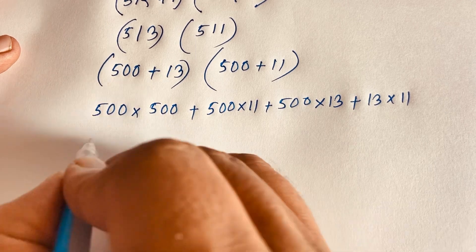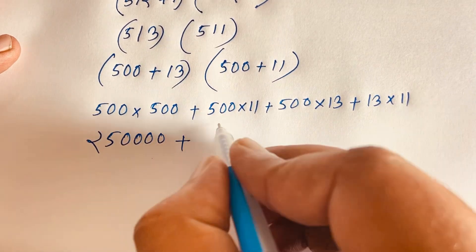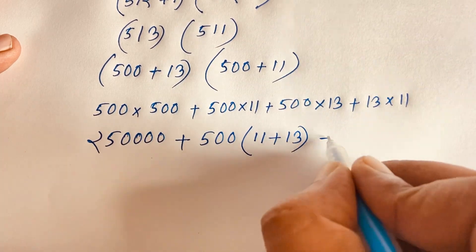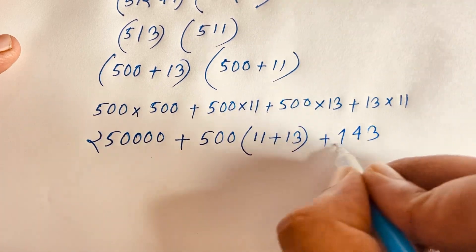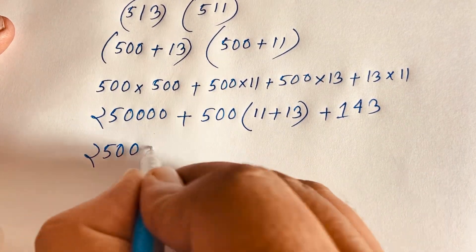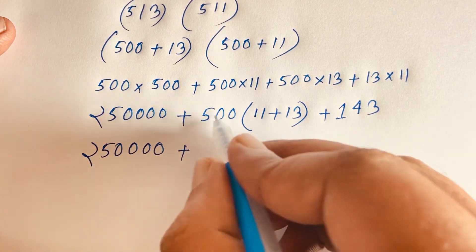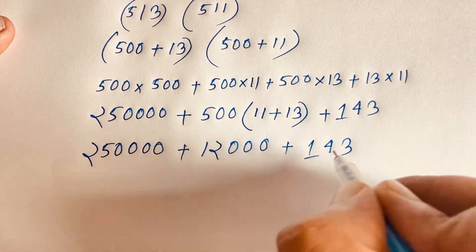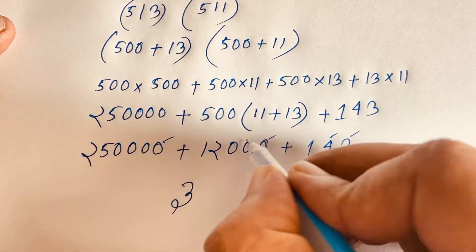500 times 500 is 250,000. Then 500 is common to the middle terms, so 500 times (11 + 13) equals 500 times 24, which is 12,000. And 13 times 11 equals 143. So we have 250,000 plus 12,000 plus 143.